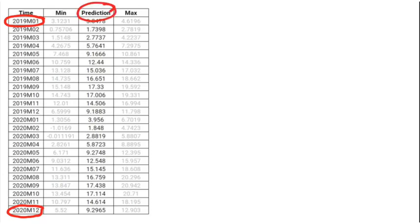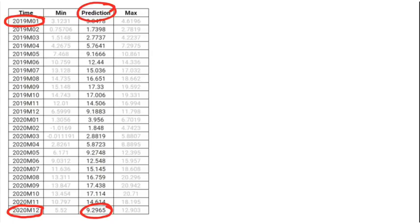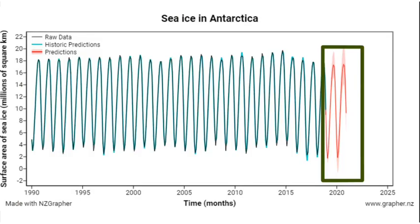We have the predicted value — that's the most likely, that's the best guess. That is the solid red line, the dark red line in that model. Then we have the minimum and the maximum, and that is the shaded area going from whatever the lowest point is to the highest point, giving that range of values.